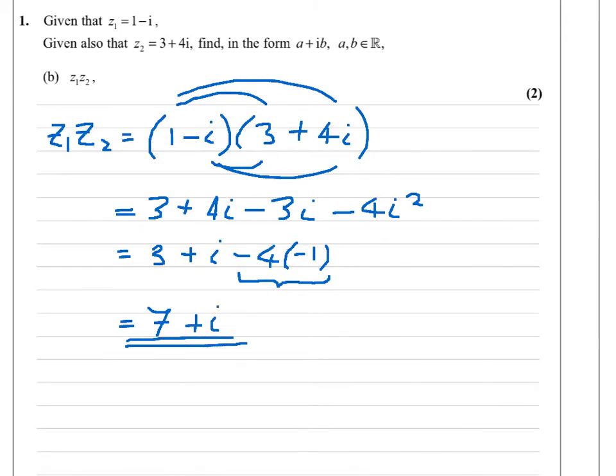Again, a two-mark question. It's a method mark if it's clear you're multiplying out those brackets, and it's an accuracy mark for the answer 7 plus i.